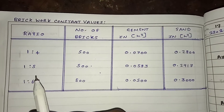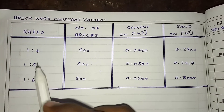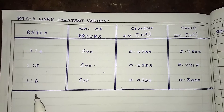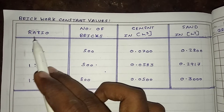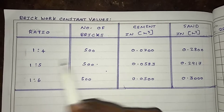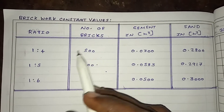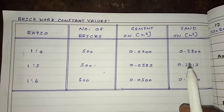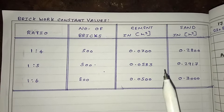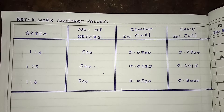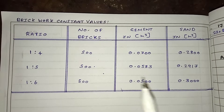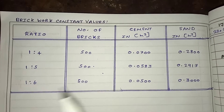Hello friends. Let me show you the constant values for 1 meter cube brickwork. I will give the ratio for brickwork mortar, along with the number of bricks, cement values, and sand values. All these values are for 1 meter cube volume of brickwork.